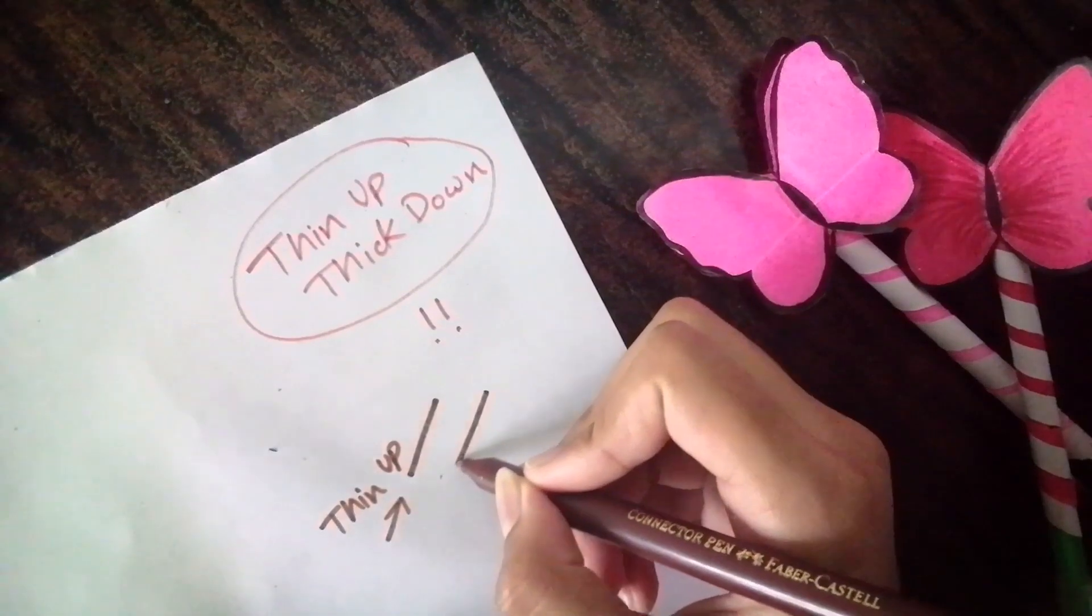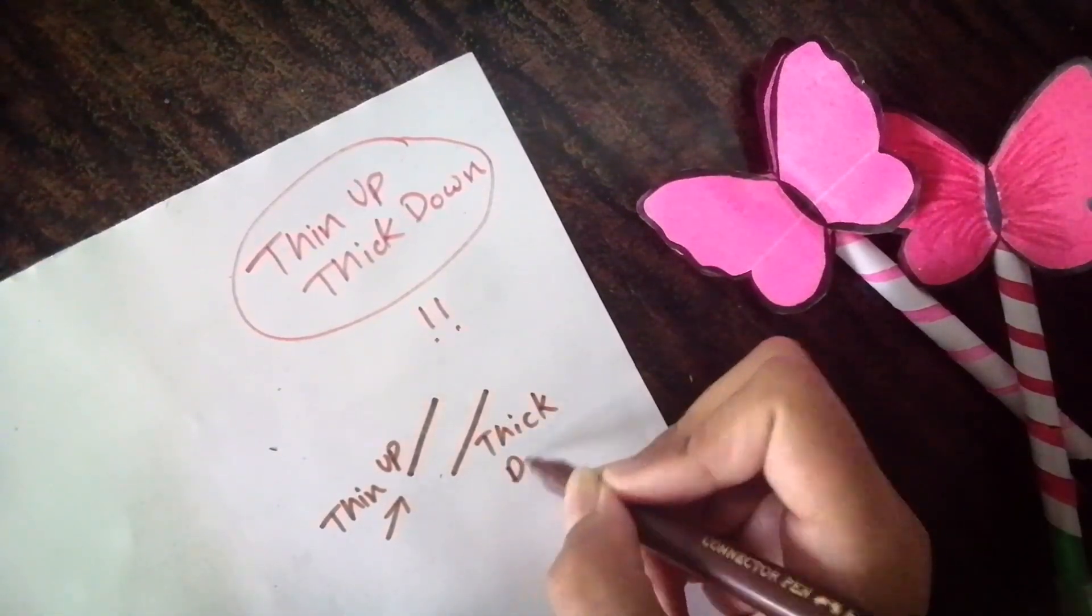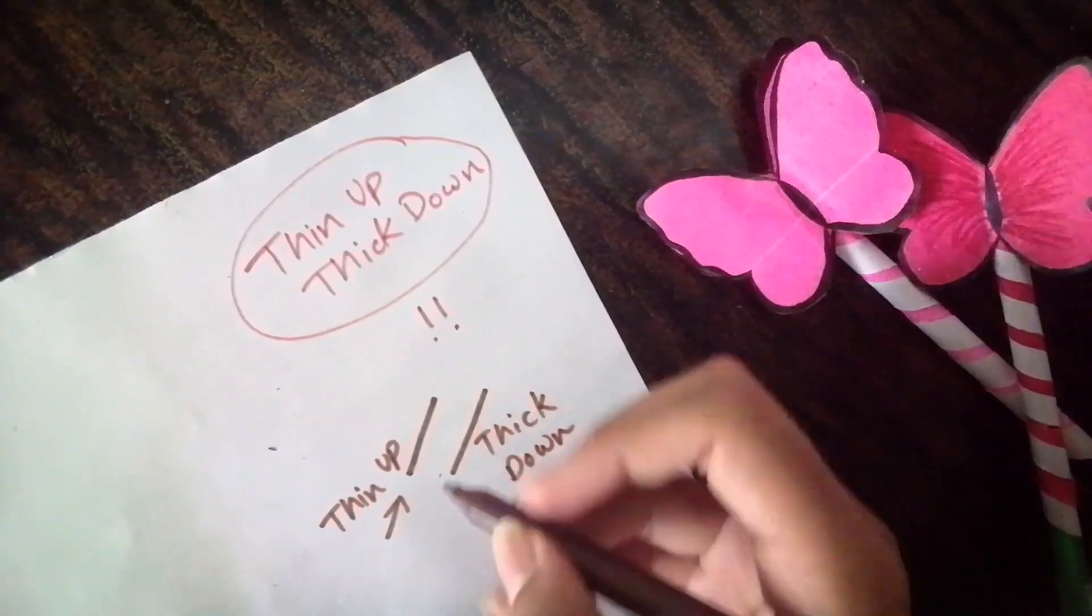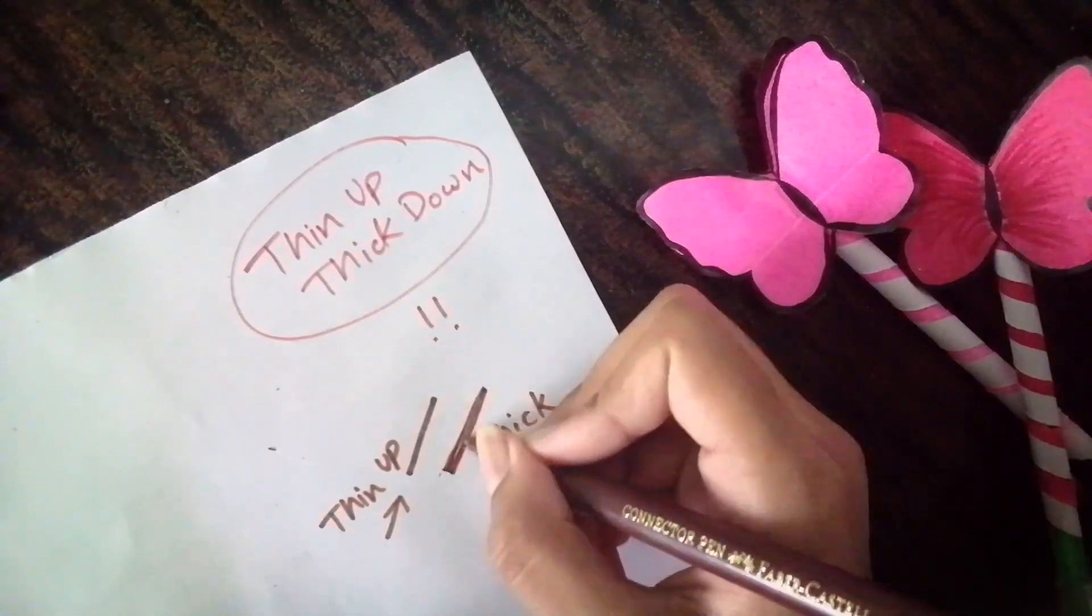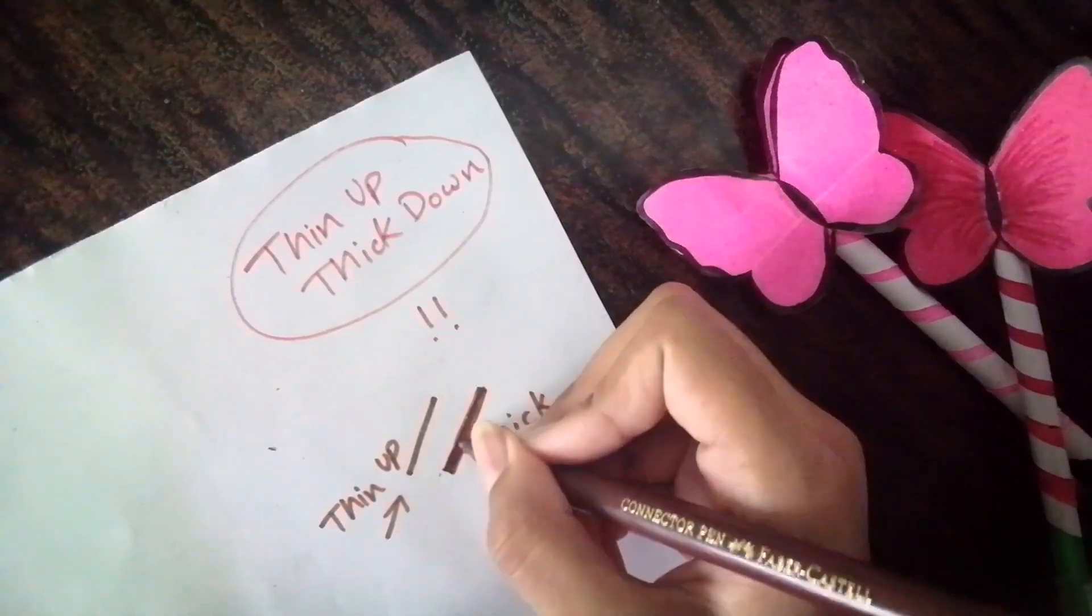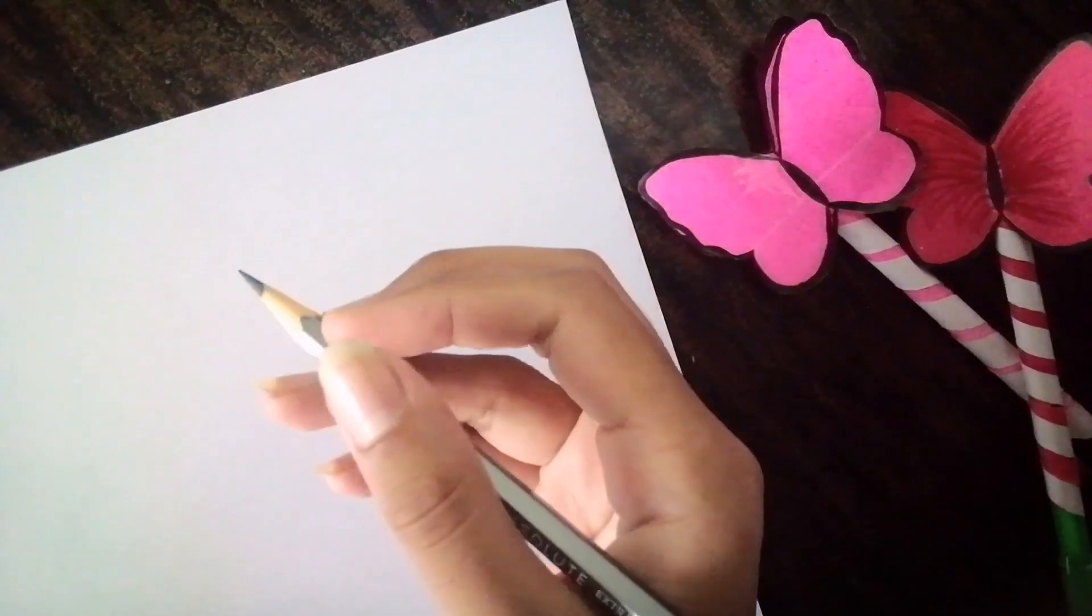But the lines which are going down, this phase, this, you need to make thick as they are going down. To make it thick, just draw a line beside it and color inside. That's it.